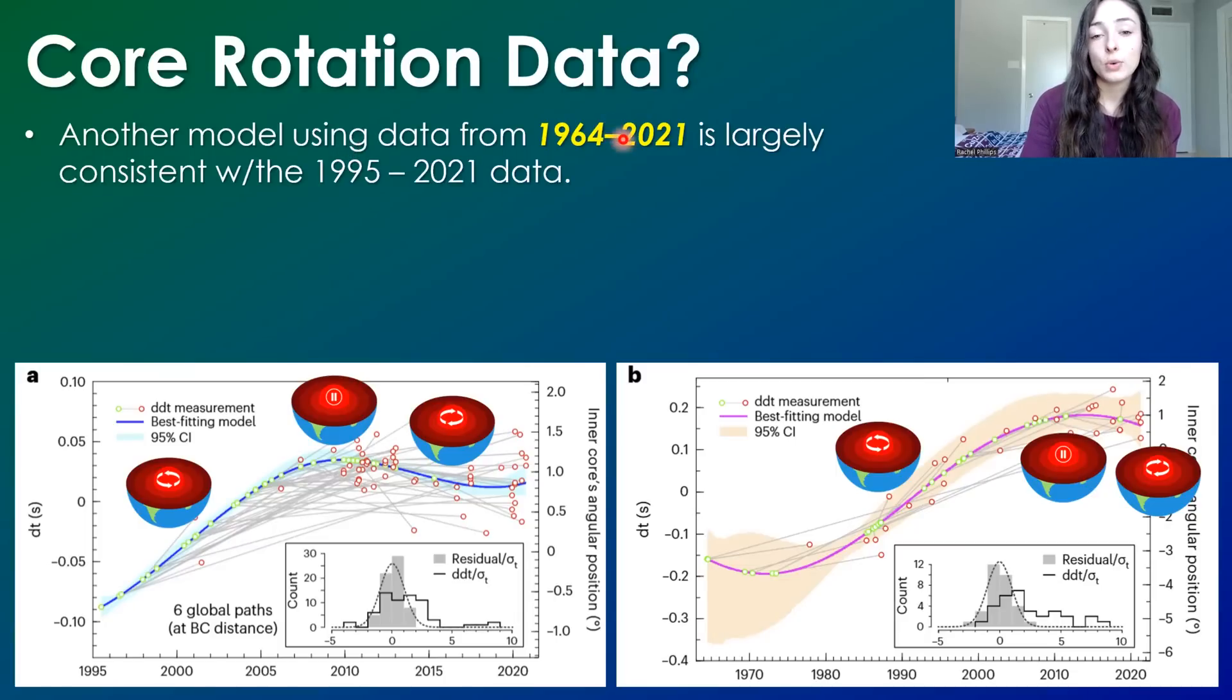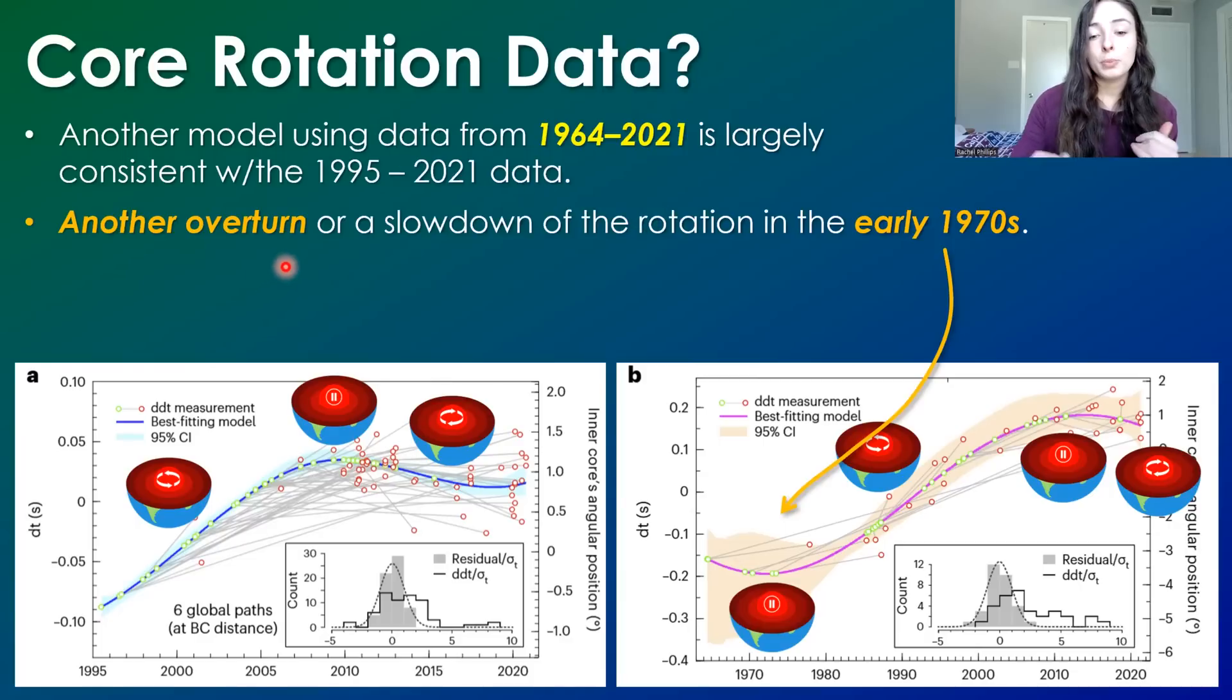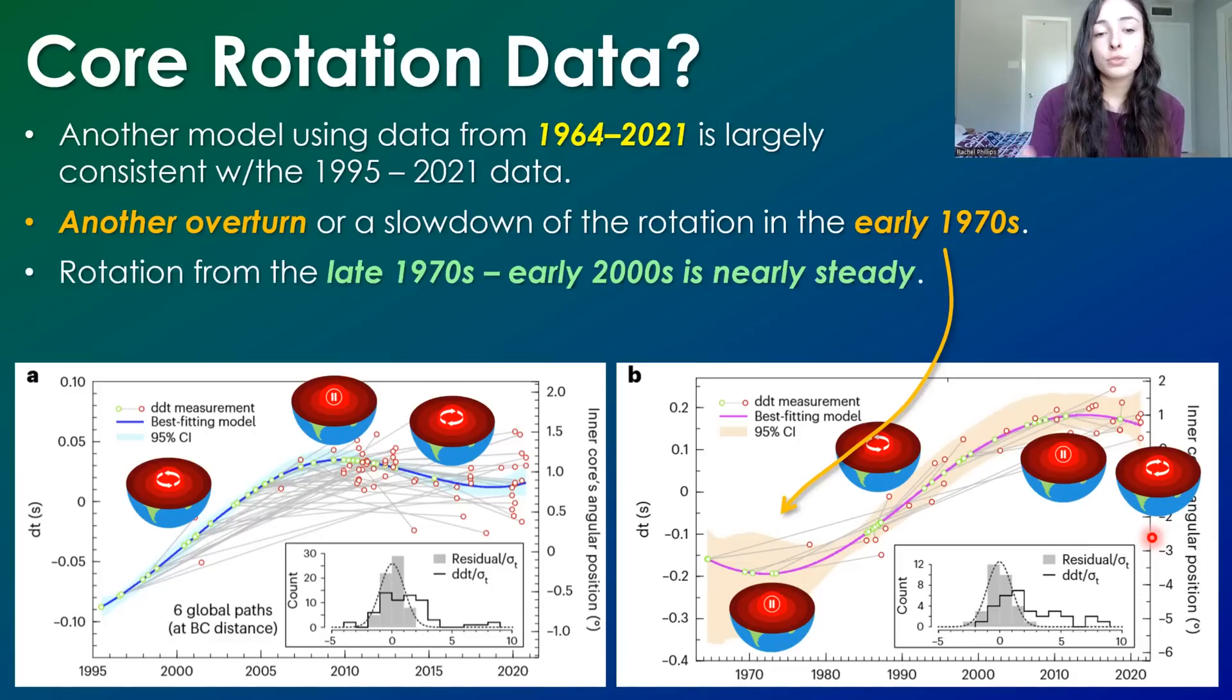They then used another set of data from 1964 to 2021. It went back further than the 1995 set, and it was largely consistent with the other set from 1995 to 2021. And they actually were able to, because it went back further, to find another overturn in the data or slow down in rotation rate in the early 1970s. This would suggest that pre-early 1970s, the rotation was probably going the other direction, and then in the early 1970s it paused and started rotating the same way as Earth again. And then in 2009-ish it paused and started rotating the opposite direction again. From the late 1970s to the early 2000s it was nearly steady.